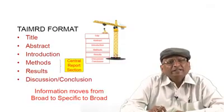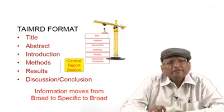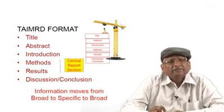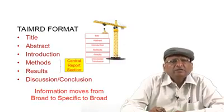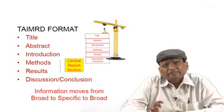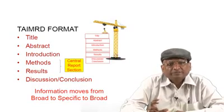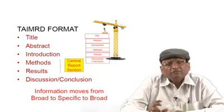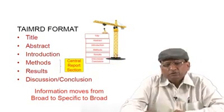The TA-IMRD format states: first is the title, second is the abstract, third is the introduction, then method, result, and discussion or conclusion. If you look at the method and result, they constitute the central report section. Information moves from broad to specific and then back to broad.